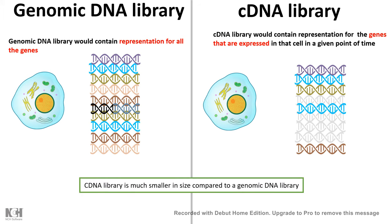In shorter terms, a cDNA library is much smaller than a genomic DNA library. For example, if a cell has 26,000 genes, the genomic DNA library would have information about all 26,000 genes, but the cDNA library won't — because at any point in time, not all 26,000 genes are expressed. So the cDNA library would have information about fewer than 26,000 genes.